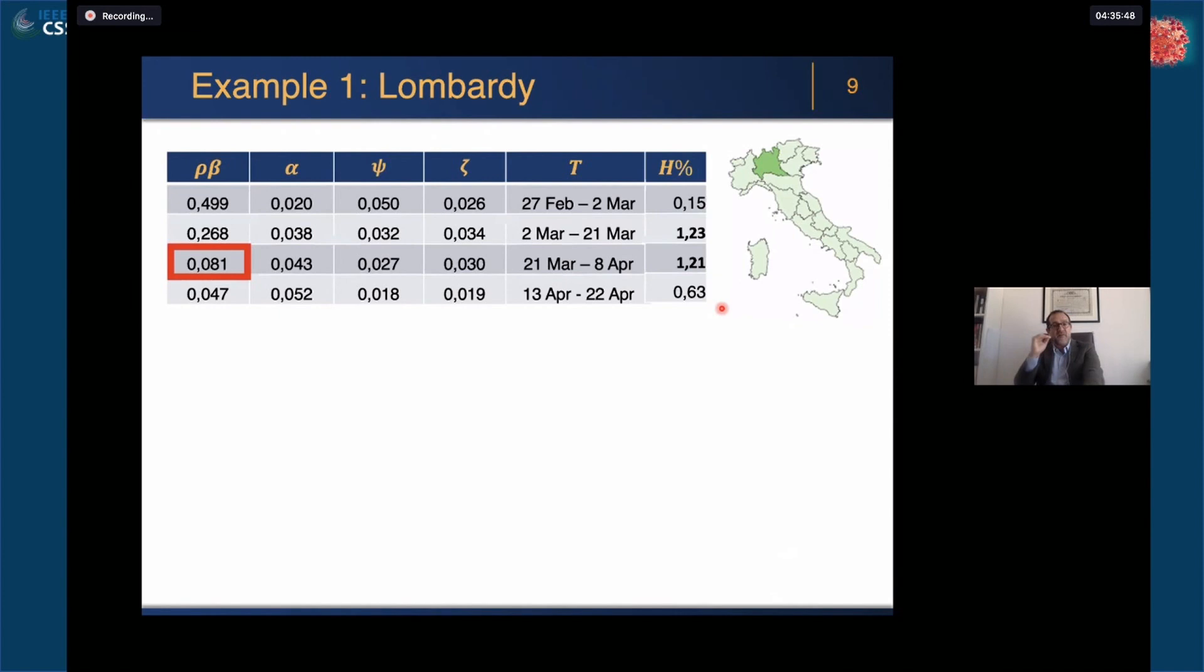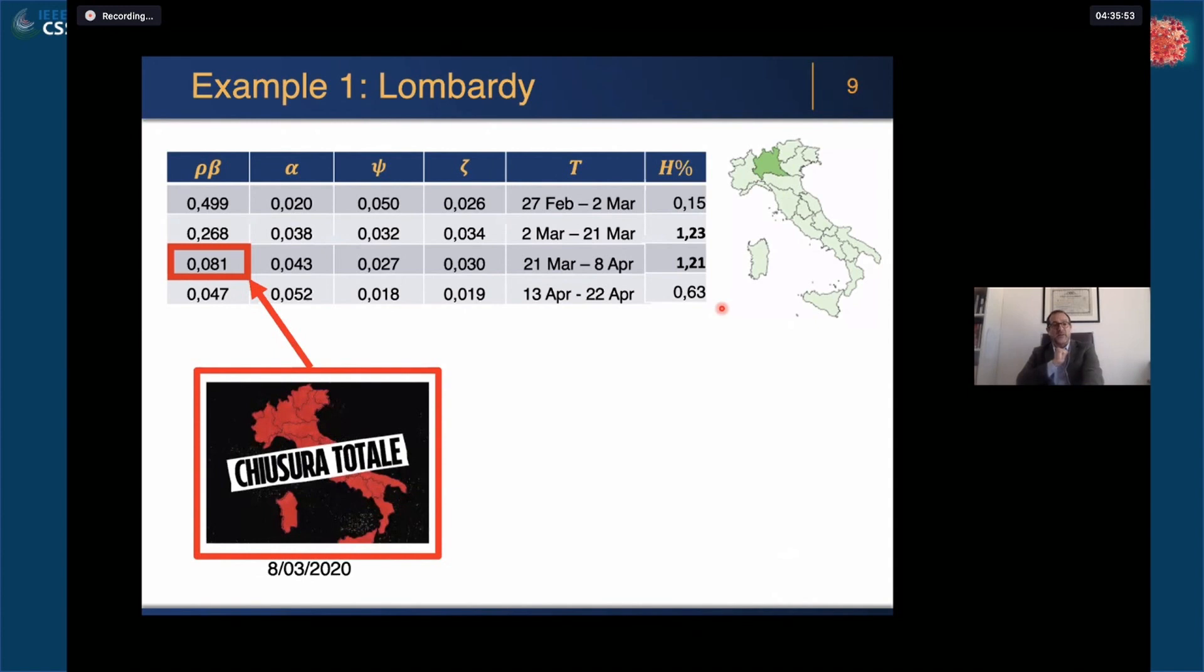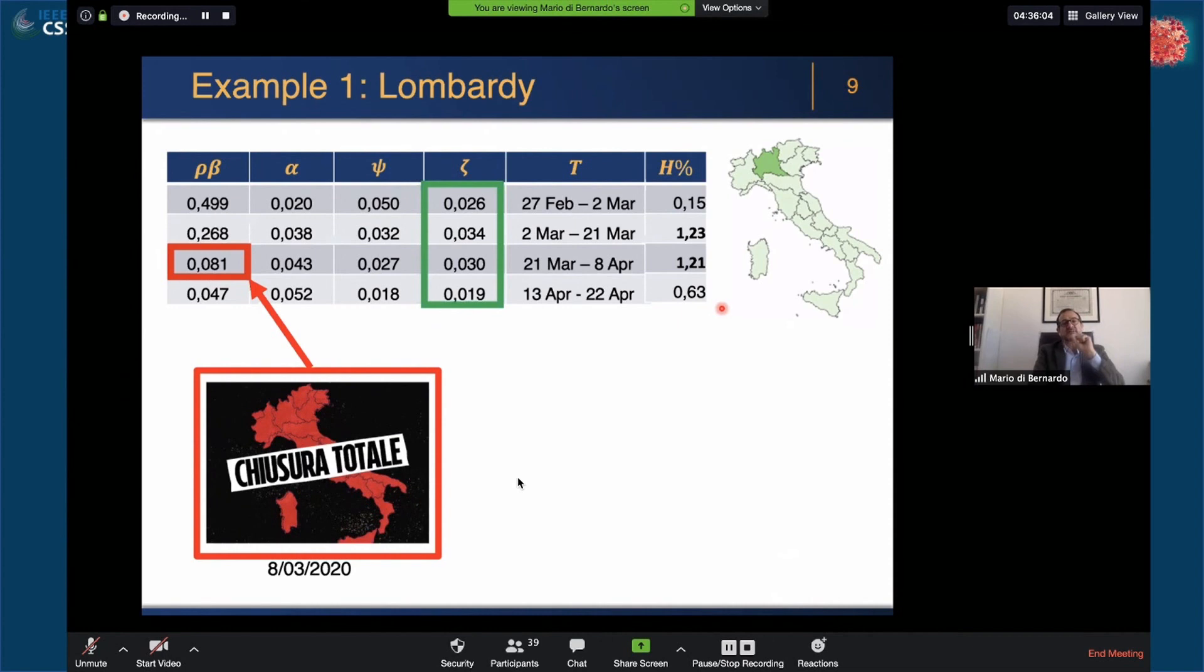Further on, if we move to the next window, you can see here that clearly we see the effect in Lombardy of the national measures taken on the 8th of March 2020 when the total lockdown was declared. This is well captured by the model.